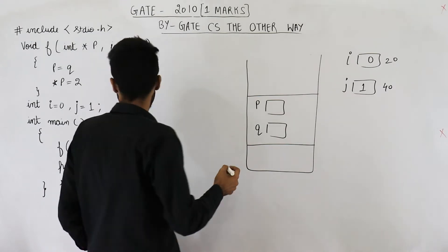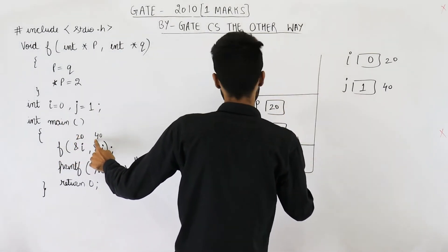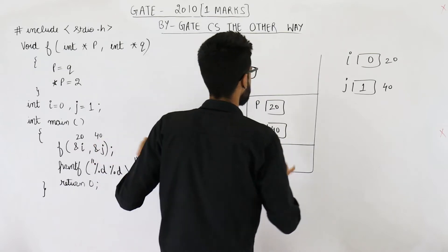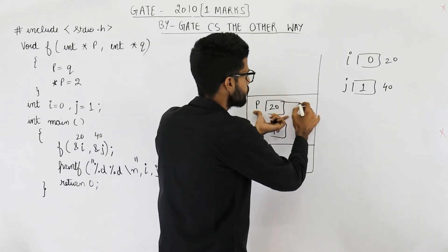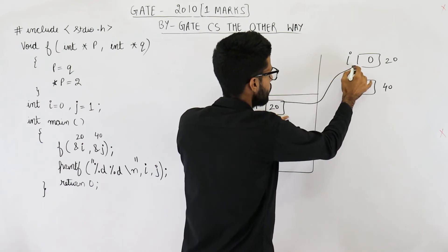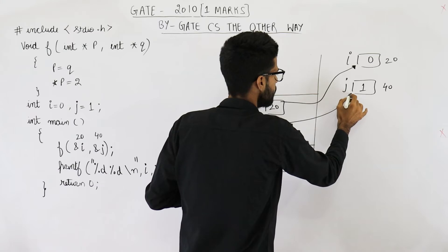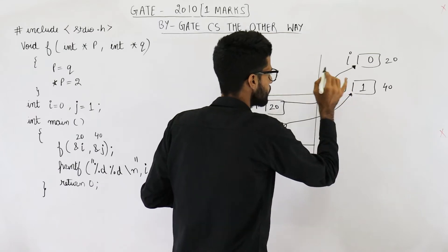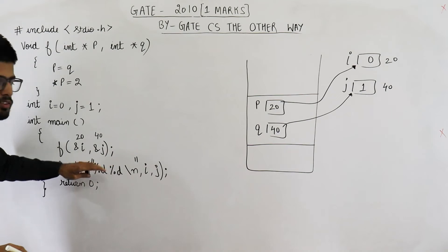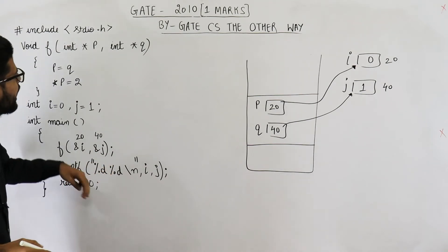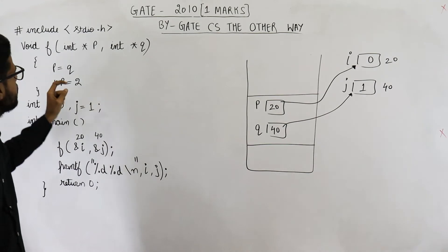So p gets a value of 20 and q gets a value of 40. That means variable p is pointing to i, and variable q is pointing to j. Now we'll pause the main function here and start execution of the function named f.